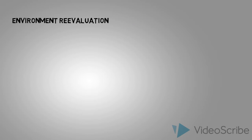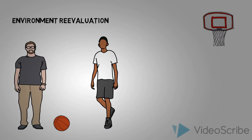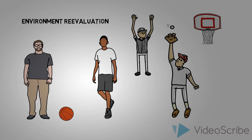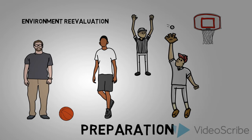Environment re-evaluation is when the individual realizes how their unhealthy behavior affects others. Billy realized that he wasn't able to keep up with his coworkers anymore when they would go play basketball.